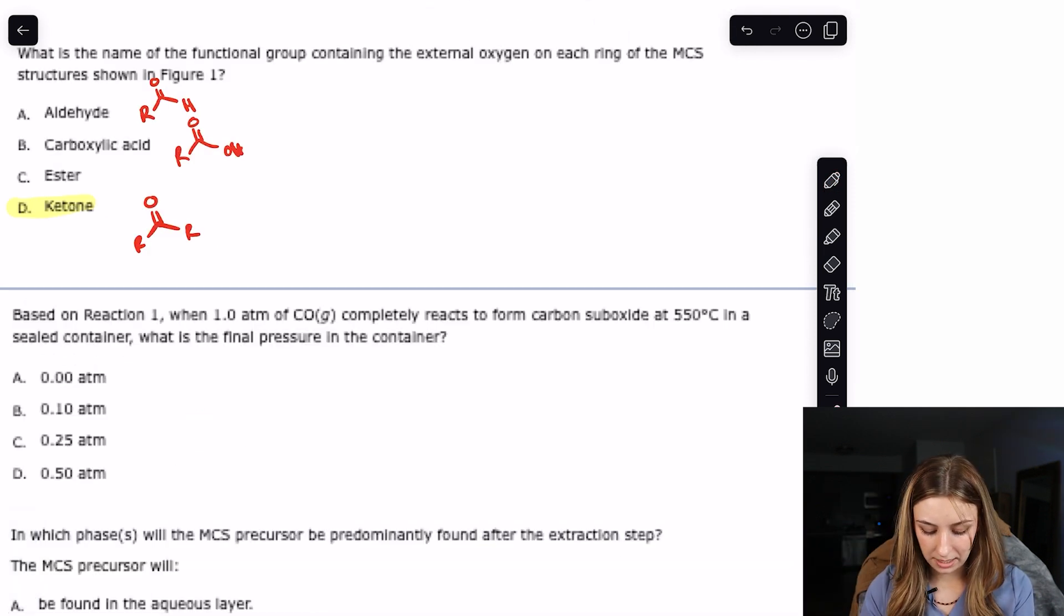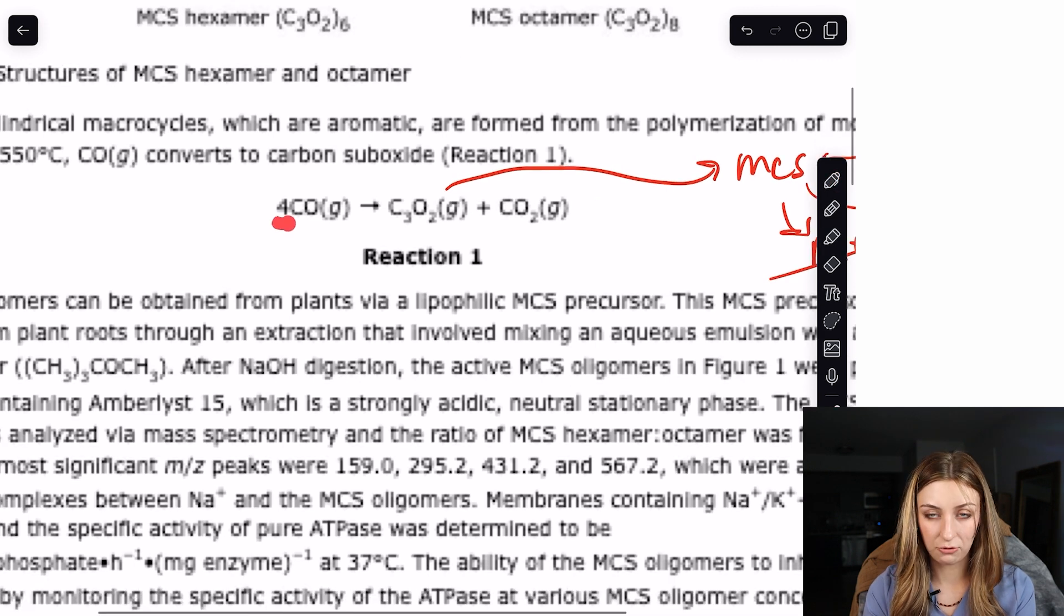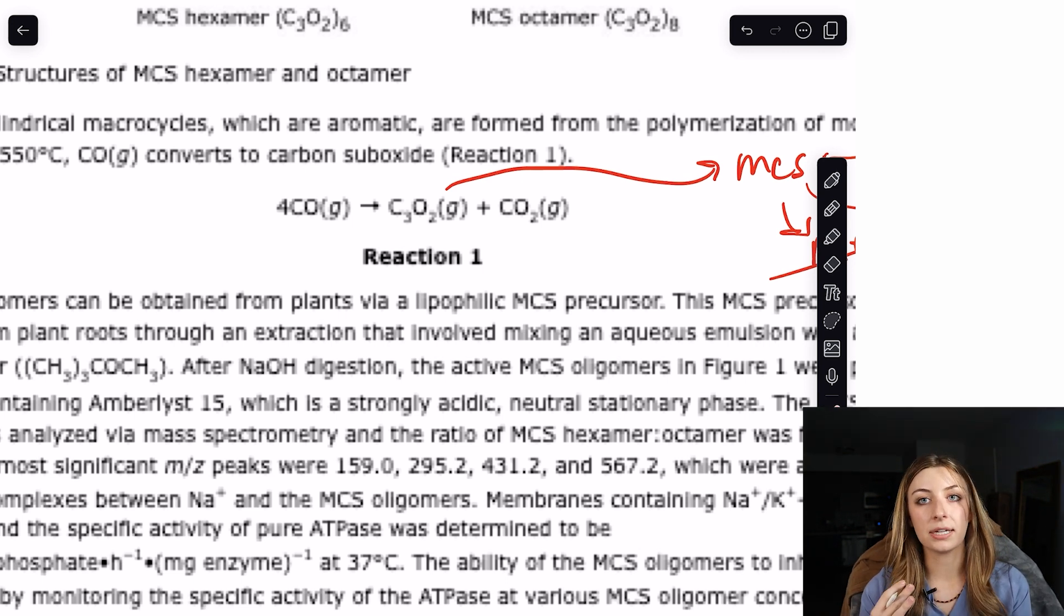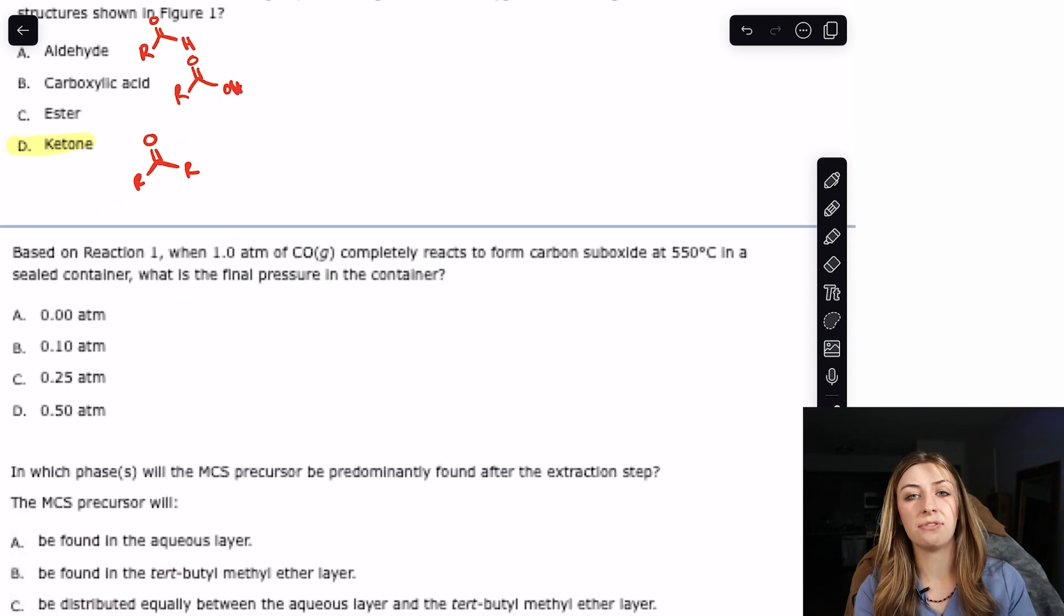The next one says, based on reaction one, when one atmosphere of CO completely reacted to form carbon suboxide at 550 Celsius in a sealed container, what's the final pressure in the container? So we're talking about pressure. Let's go back up to this reaction. I think I can see how they're trying to confuse us. Definitely take note of the four in front of the CO here. So what this tells us is that we have four moles CO and we're going to two moles of other stuff. So in my mind, going from four to two, as far as moles go, my pressure is probably going to cut in half or it's going to double.